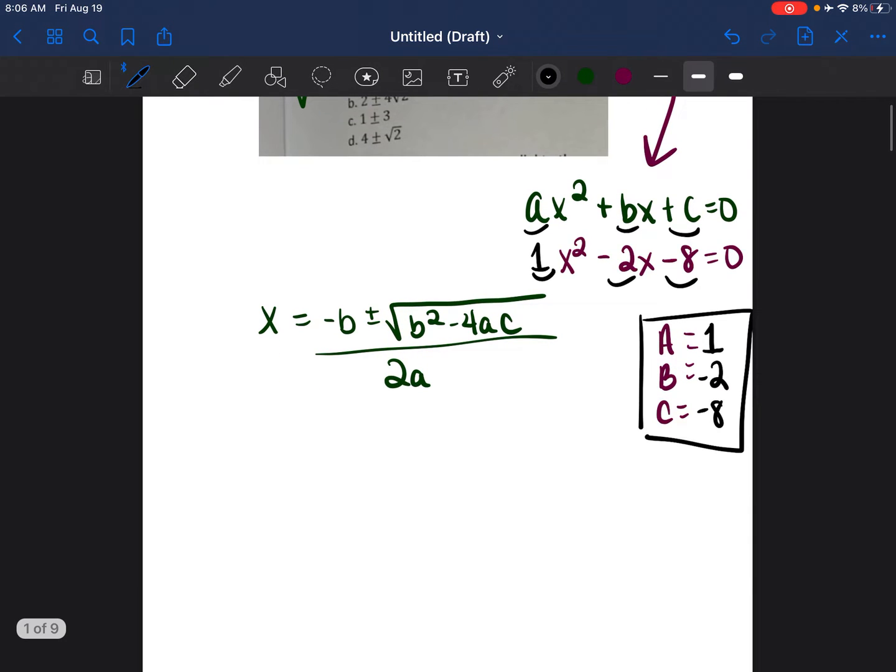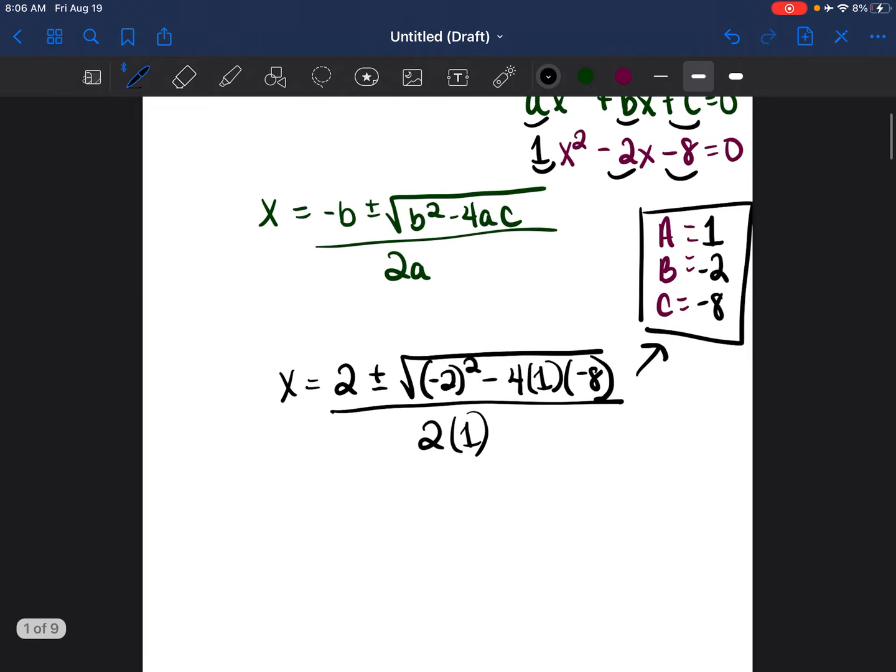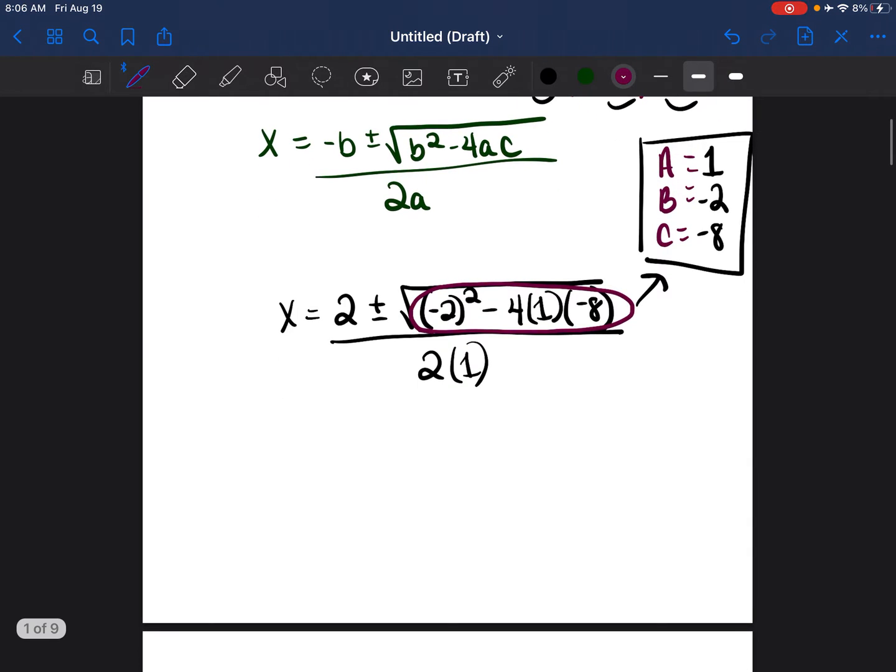So the opposite of b, which is the opposite of negative 2, is just 2. Plus or minus. Then it's going to be b squared, so negative 2 squared minus 4 times a, which is 1, times c equals negative 8. Divided by 2 times a, which is 1, which is just going to be equal to 2. I recommend, now that you have the problem set up, just take what's underneath this square root and then go ahead and do it on the side of your piece of paper.